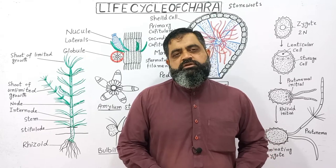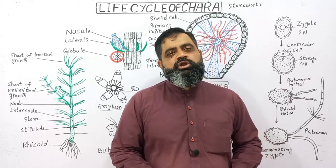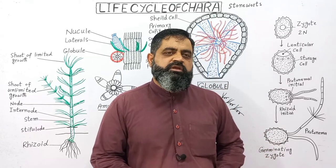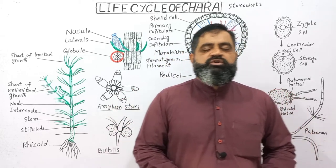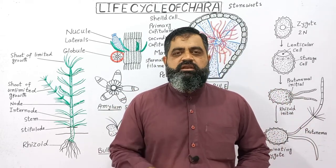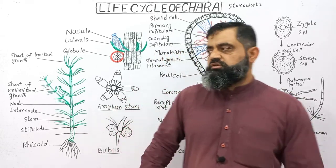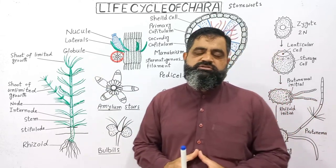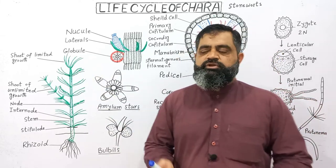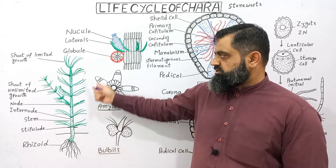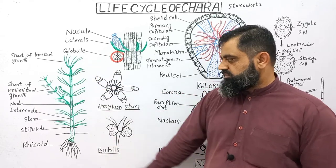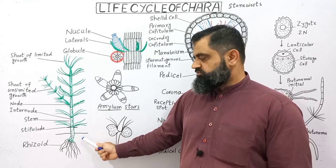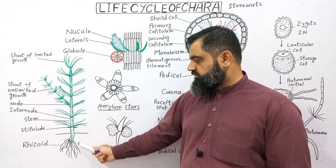Hello to all students. Today we are going to discuss the life cycle of Chara. Chara is a green alga which is found submerged in fresh water. We had already discussed its structure in another video, so let's revise one more time. Chara is a small plant-like alga which is found submerged in water.